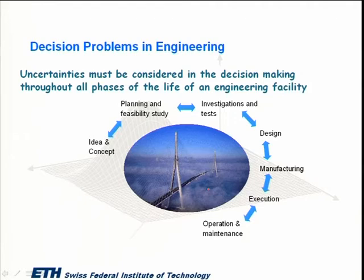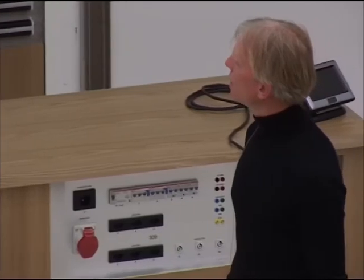The idea, concept, planning and feasibility studies can take anywhere from two to many years. A typical example is the Messina Bridge project, where the planning and feasibility study phase has been extremely long — most major engineering companies have projects ready in their drawers if Italy would decide to build it. The investigation, testing, design, manufacturing, and execution phases are typically limited to about four to six years depending on project size.